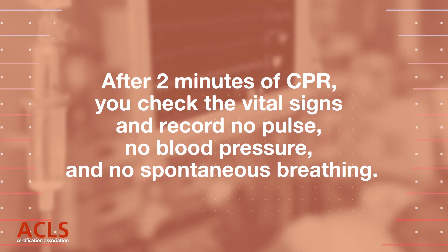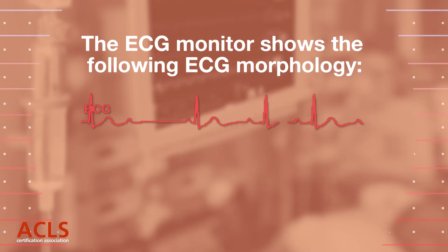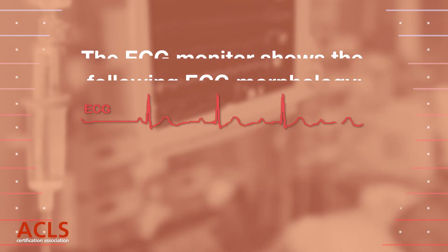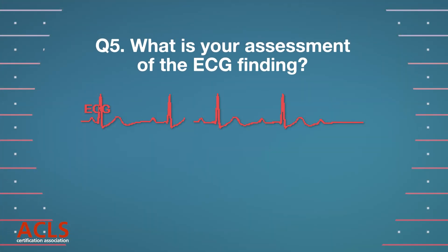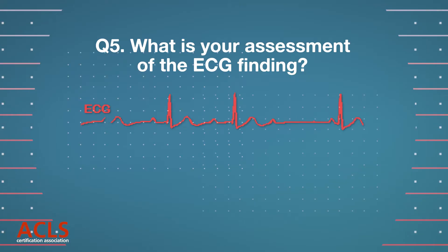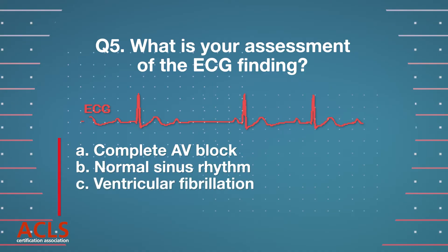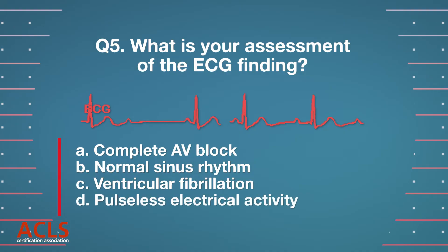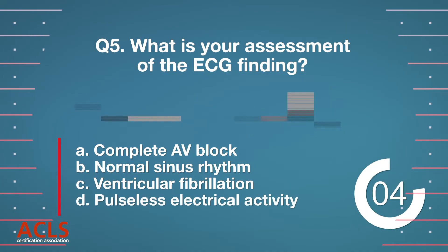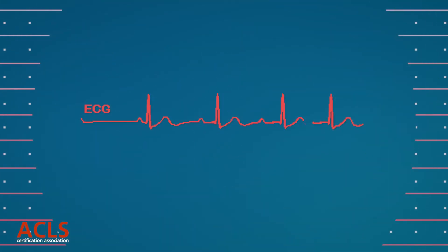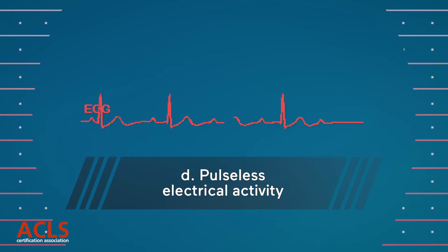After two minutes of CPR, you check vital signs and record no pulse, no blood pressure, and no spontaneous breathing. The ECG monitor shows the following ECG morphology. Question 5: What is your assessment of the ECG finding? A. Complete AV block. B. Normal sinus rhythm. C. Ventricular fibrillation. D. Pulseless electrical activity. Correct answer: D. Pulseless electrical activity.